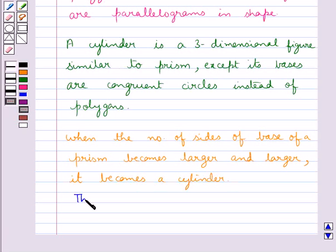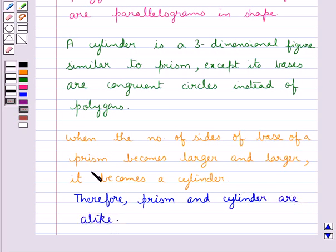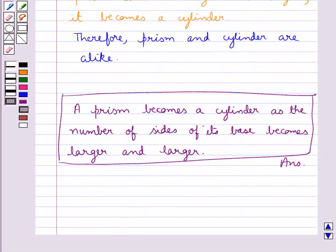Therefore, we say that prism and cylinder are alike. So our final answer is a prism becomes a cylinder as the number of sides of its base becomes larger and larger.